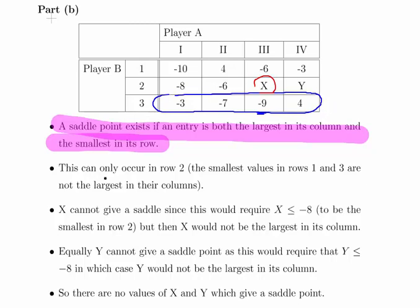So it only can occur, if it occurs at all, it can only occur in row two. The smallest values in row one and row three are not the largest in their columns which I've just described.